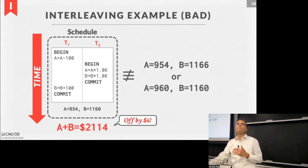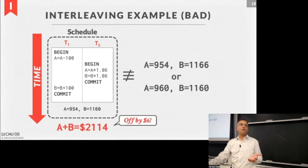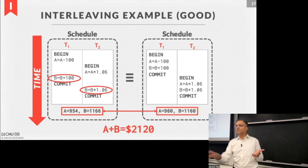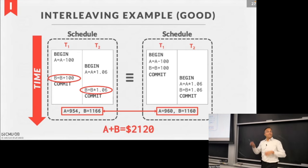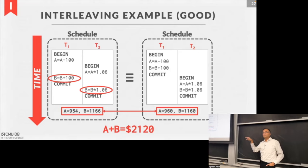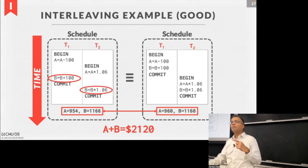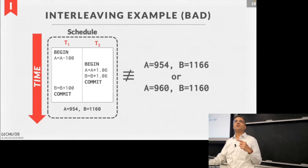Here T1 starts and subtracts $100 — so A now has $100 already removed. T2 starts and gives 6% interest, but it's looking at an A value that is $100 short. The sum total ends up as $2,114, which is $6 off from what it should be. This is an example of an unsafe interleaving where you end up with the wrong value.